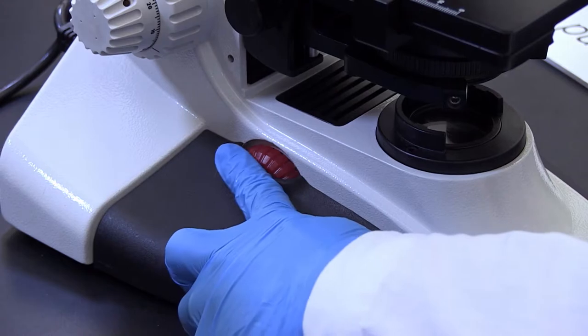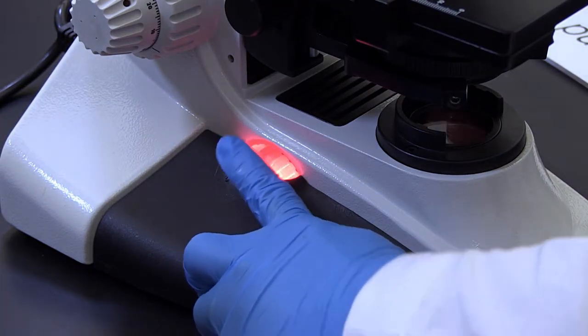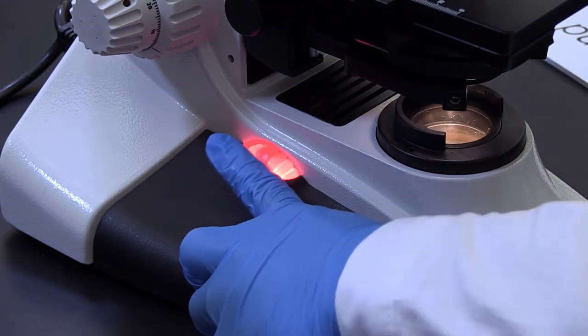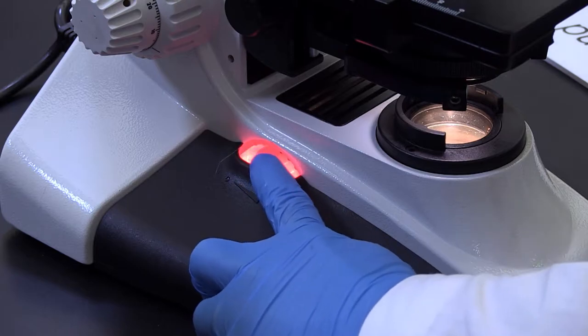A light source is located in the base of the microscope. A rotating wheel or knob can be used to adjust the intensity of the light.